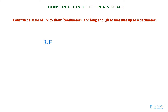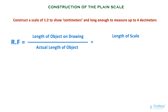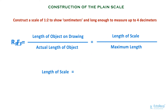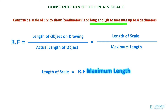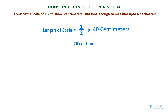We know the formula for RF, that is equal to the length of the object on the drawing divided by the actual length of the object. We can also write it as length of scale divided by maximum length. So, length of scale equals RF times maximum length. In the question, it says 'long enough to measure' — that means maximum length of the scale, given as 4 decimeters. We need to find the length of the scale: 1/2 into 40 centimeters gives 20 centimeters.